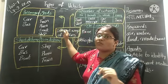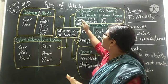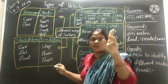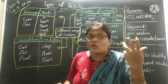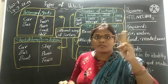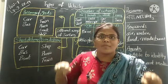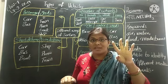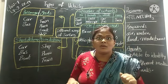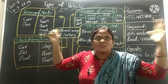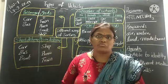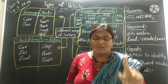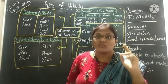We are differentiating the vehicles. First of all, we can differentiate them by number of wheels. Do you have a cycle at home? How many wheels does your cycle have? Two wheels. Do you have a motorcycle — I mean a bike? How many wheels? Two wheels. Car? Four wheels. Train — how many wheels? Boat and ship — do they have wheels? No. So we can differentiate vehicles by number of wheels.